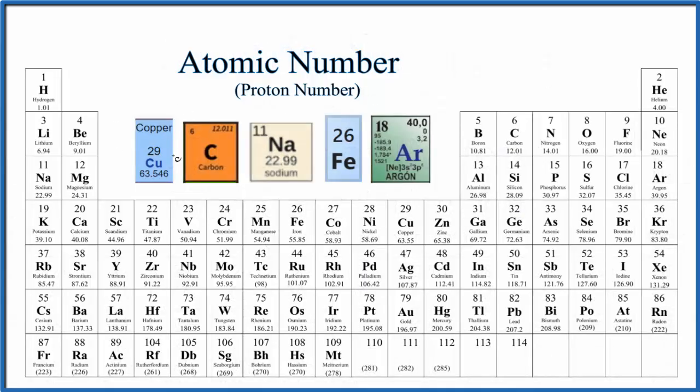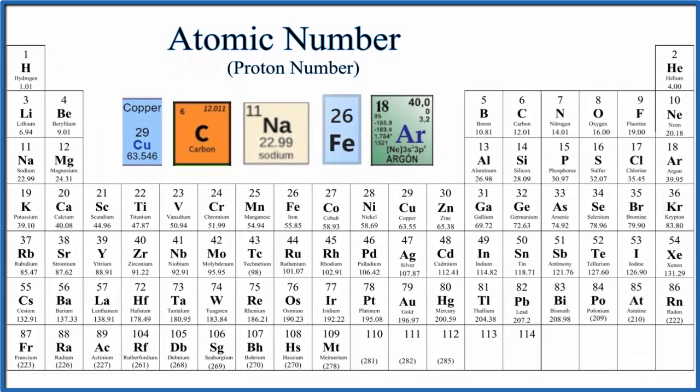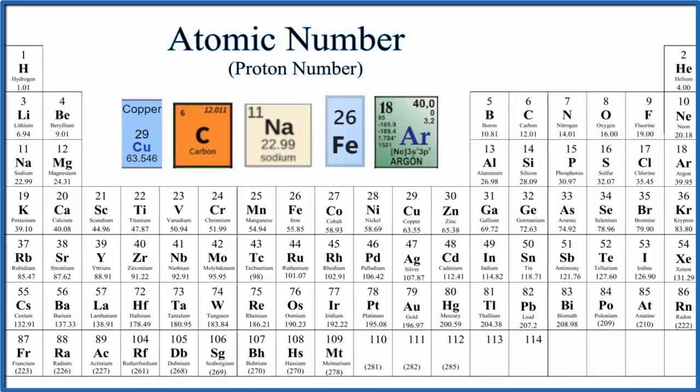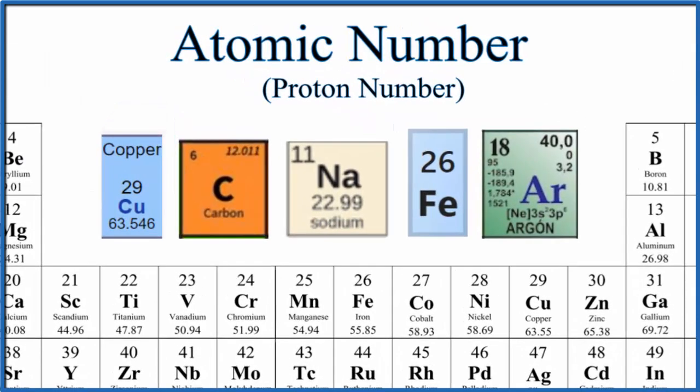So I've copied some blocks from different periodic tables here. Take a moment and figure out the atomic number, number of protons, and the number of electrons for each one of these elements here. Since the atomic number equals the number of protons and it equals the number of electrons for these neutral elements here.